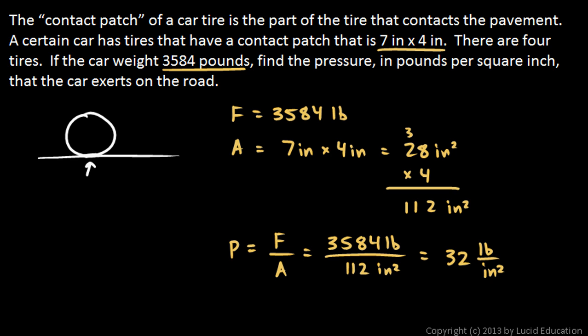And some of you might recognize this number, 32 pounds per square inch. That's the pressure in the tire. Now, that's not the same for every car. Some cars have higher pressure tires. But for a lot of cars, 32 pounds per square inch is the air pressure in the tire. And, of course, the pressure on the road should equal the air pressure in the tire. 32 pounds per square inch in this case.